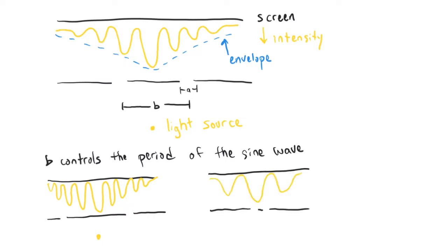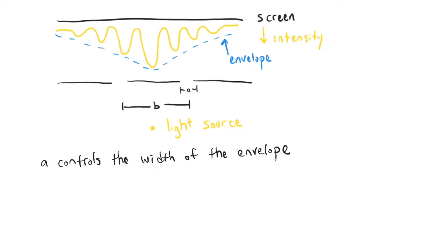And conversely, if you make the slits closer together, so make B smaller, we get a slower sine wave. Or again, by fast we mean more oscillations per unit distance, and by slow we mean very few oscillations per unit distance. The key point is that the distance between the slits controls the period of the sine wave. A, on the other hand, the width of any one slit, controls the width of this multiplicative envelope. So in this case, when the slits are very wide, the envelope gets narrower.